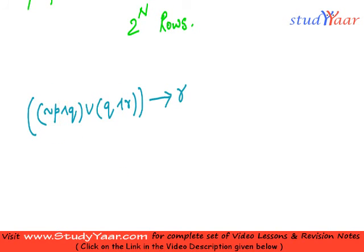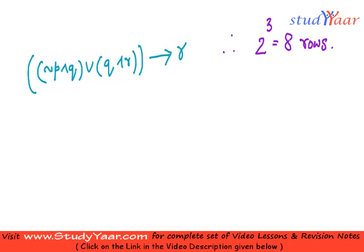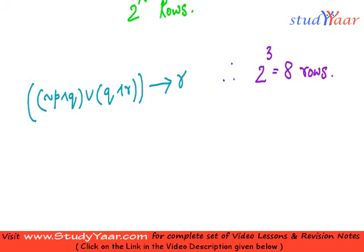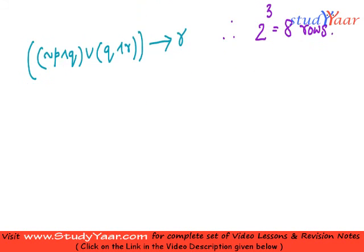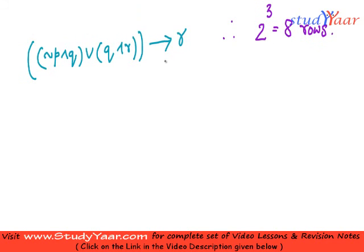With 3 primitive propositions, you can say it is going to have 2 raised to 3, equal to 8 rows. Let's try to create a truth table for this. We already know the rules for creating truth tables for conjunction (and), disjunction (or), and implication, so we can create a truth table for this proposition.